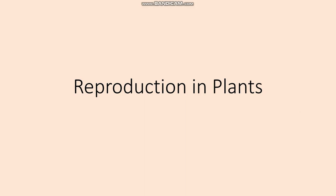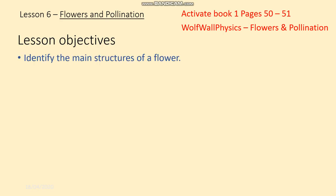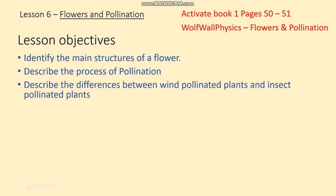Okay then, reproduction in plants. The first lesson is entitled Flowers and Pollination — that should be the title that goes into your book or into your notes. You can find information about this lesson in Activate Book 1 pages 50 to 51, or on the YouTube channel WolfWallPhysics where the video will be titled Flowers and Pollination. By the end of this lesson you should be able to identify the main structure of a flower, describe the process of pollination, and describe the difference between wind pollinated plants and insect pollinated plants.